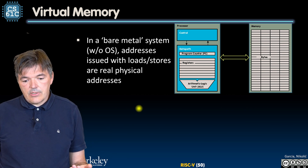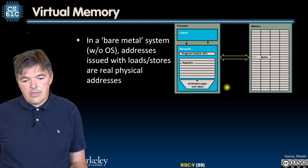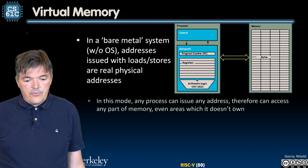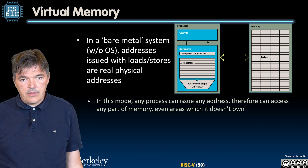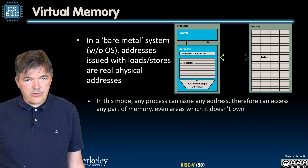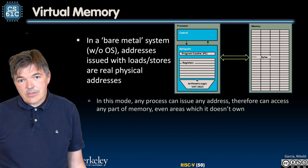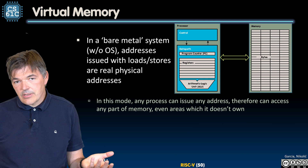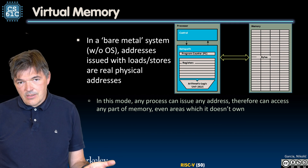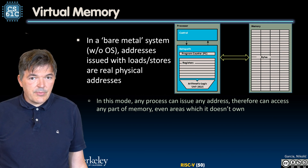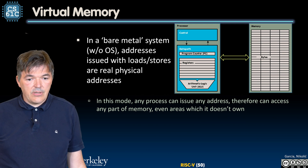So a process running on a processor is going to be addressing real physical locations in memory. If we have multiple processes, each of them can issue any address and can therefore address any part of the memory — even parts it does not own, where another process believes it has ownership. That's a problem because multiple processes can overwrite each other in memory.